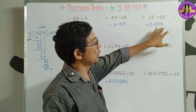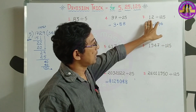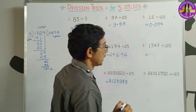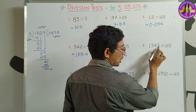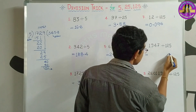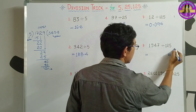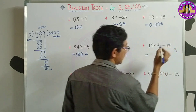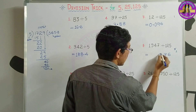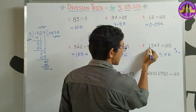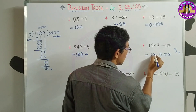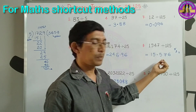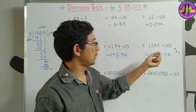The value of 12 by 125 is 0.096. Now let's look at 1947 by 125. We divide by 8. 8 sevens are 56. 5 is there. 8 fours are 32 plus 5 equals 37. 7 is there. 8 nines are 72 plus 3 equals 75. 7 is there. 8 ones are 8 plus 7 equals 15. So keep a decimal point after 3 digits from last. The difference gives 0.095.